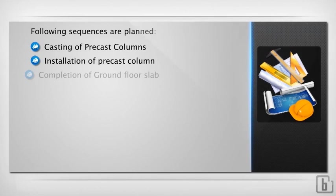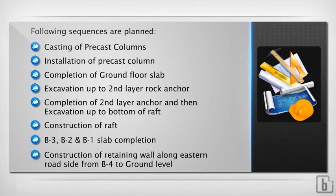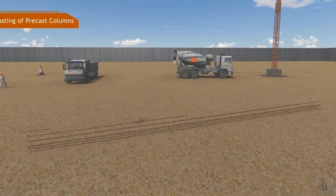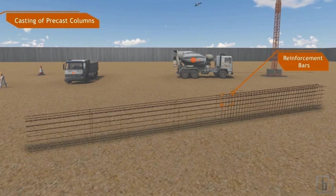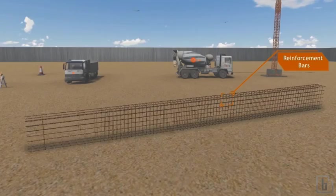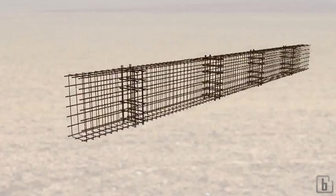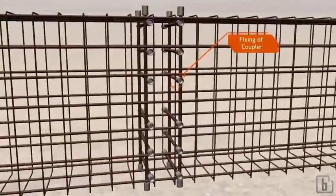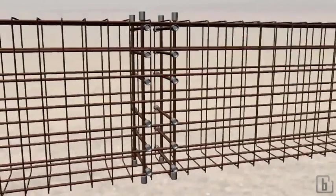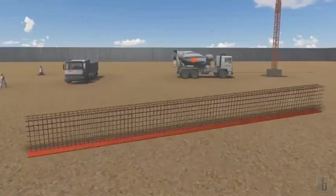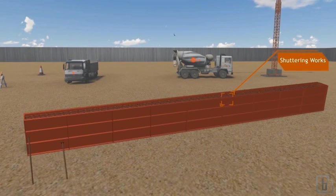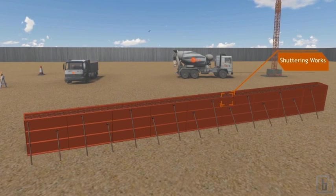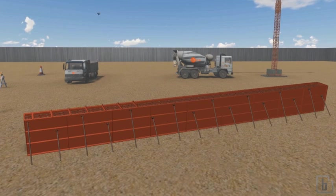General sequence of operation for top-down construction: following sequences planned - casting of precast column. Reinforcement work shall be fabricated as per approved drawing and bar bending schedule with proper cover block and fixing of coupler at required level. After completion of reinforcement work, side shuttering works shall be carried out with proper dimension and levels with proper support.